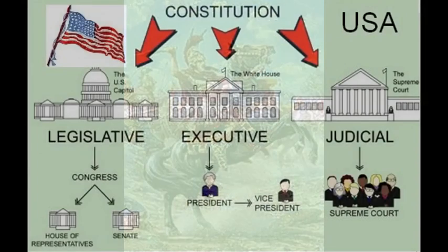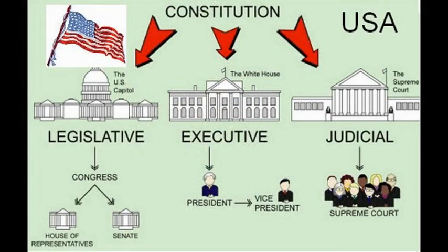In America, the rule of the land is dictated by elected executive and legislative branches of the government, and the president has veto powers. The legislative branch, called Congress, makes laws. It has two houses: the House of Senate with 100 elected senators, two from each state who serve for six years, and the House of Representatives with 435 elected representatives representing various districts for two years.